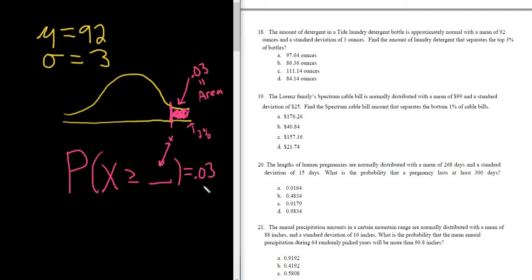So x has to be bigger than this number, and this area is 0.03, right? So the probability that x is bigger than this number is 0.03. So we want the area to the right of this number to be 0.03. So let's type that into StatCrunch.